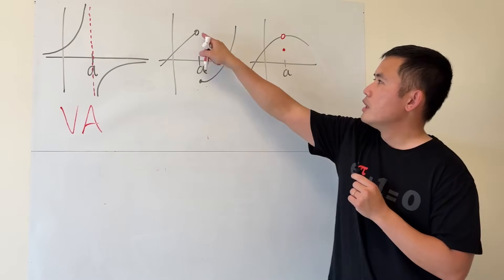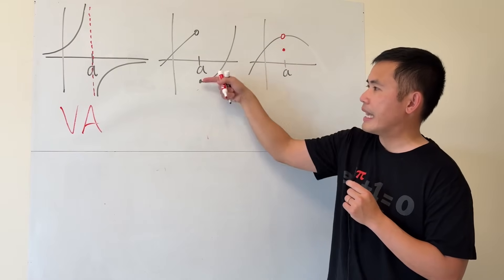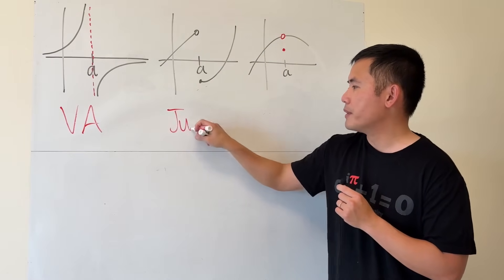Now, for the next one, the graph goes from here to here. There's totally a gap, right? We call this the jump discontinuity.